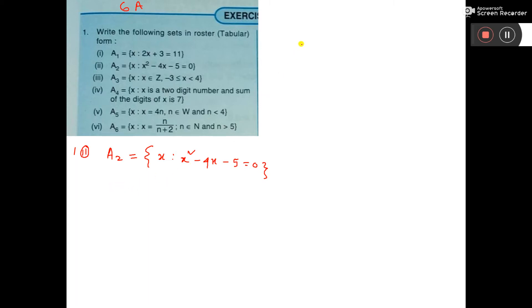So we can write x² - 4x - 5 = 0. To break the middle term factorization, we get x² - 5x + x - 5 = 0.